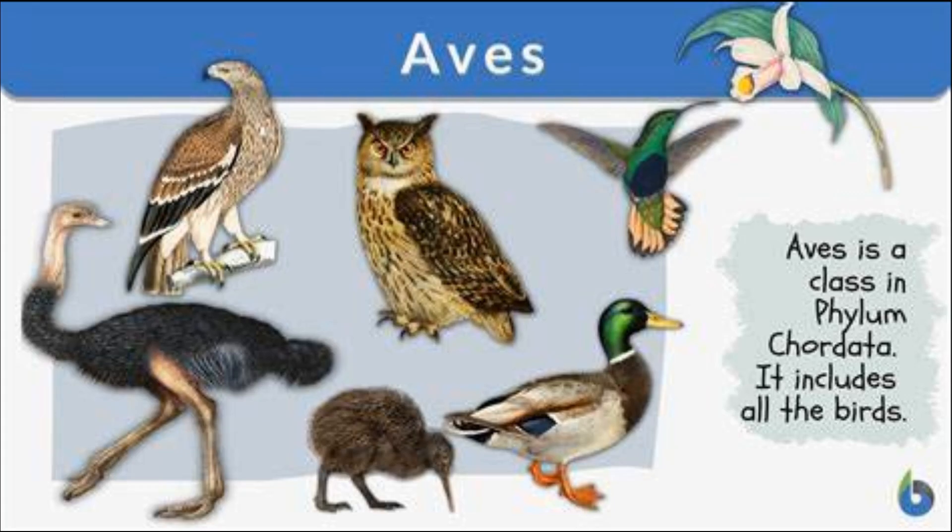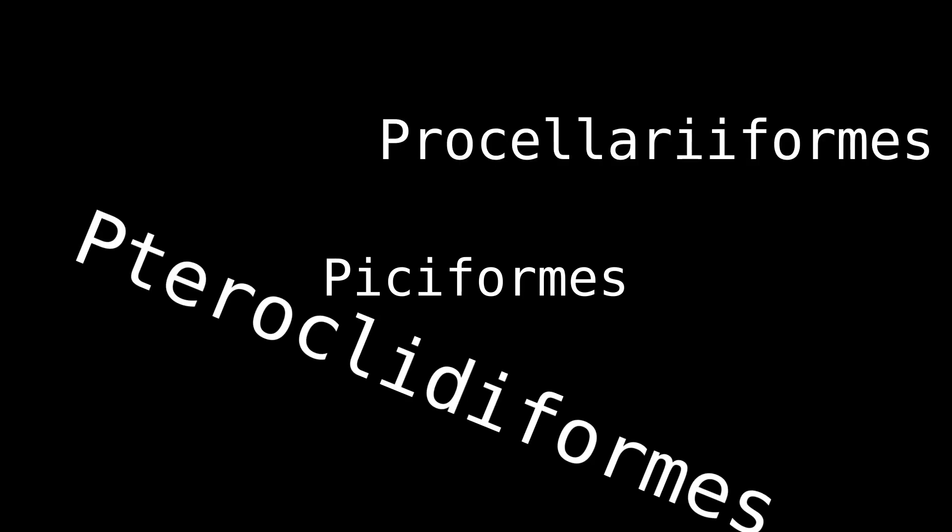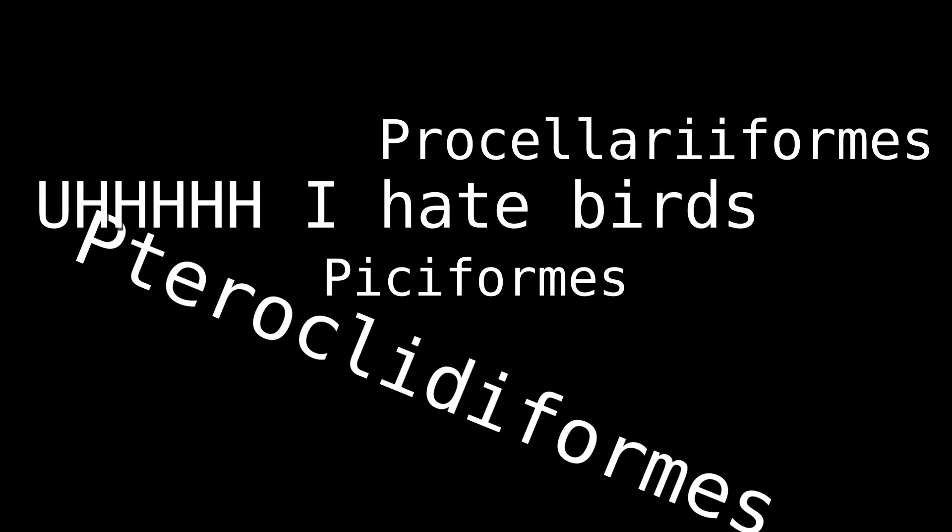Next up we have Aves — these are the birds — with 22 avian orders. I'm going to go through them pretty quickly. Passeriformes: eight toes total, four on each foot. Psittaciformes has six toes, three on each foot. Pteroclidiformes has three on each foot, so six total. Accipitriformes has four on each foot. Galliformes also has four on each foot. Otidiformes: four on each foot. Haematopodidae: four on each foot.